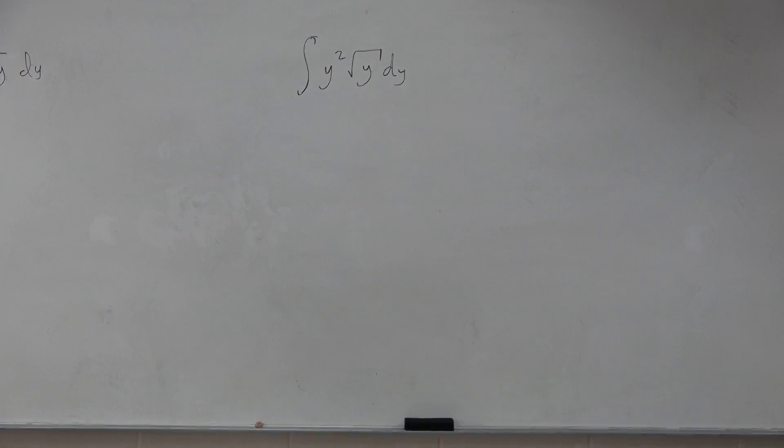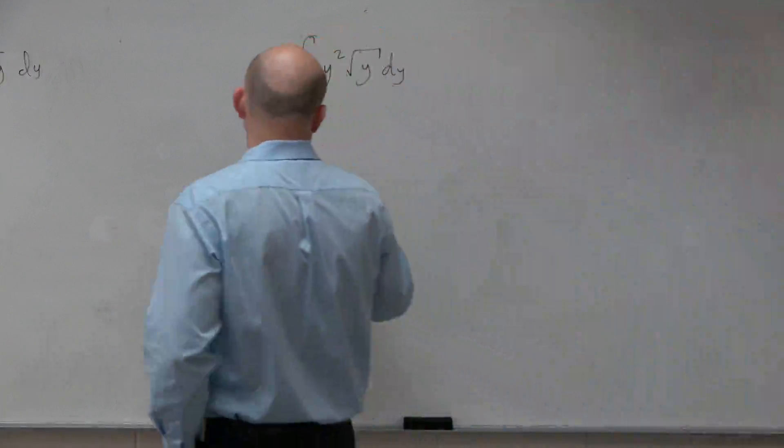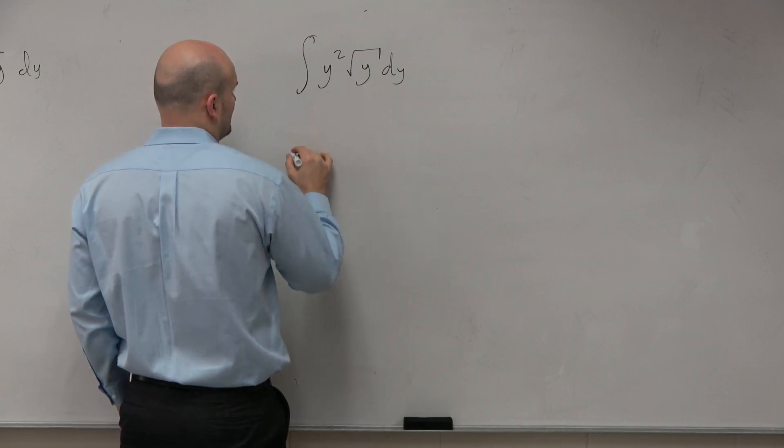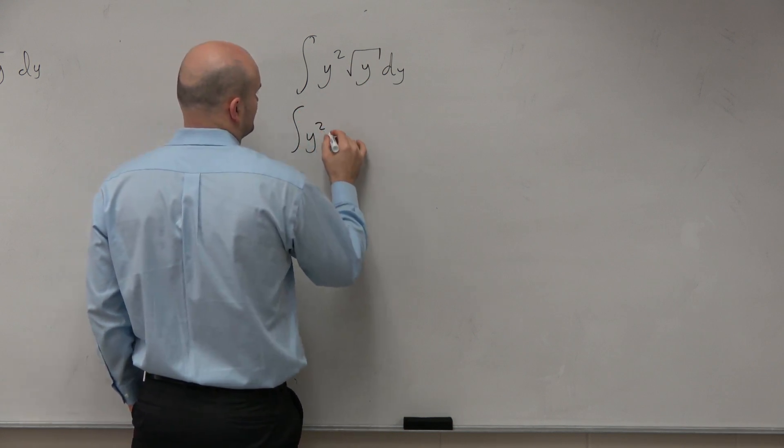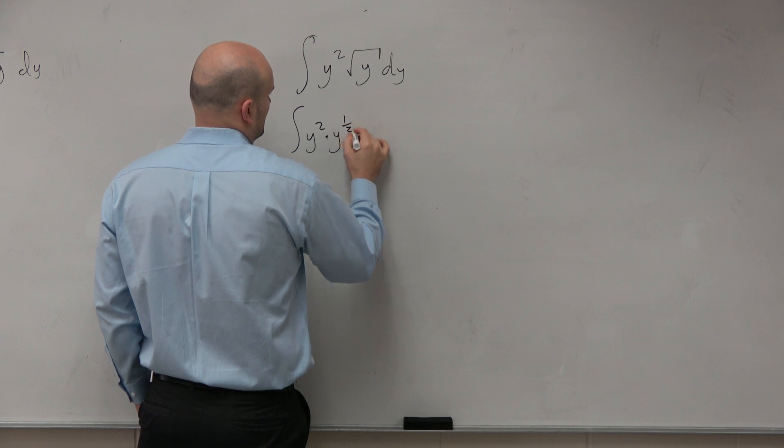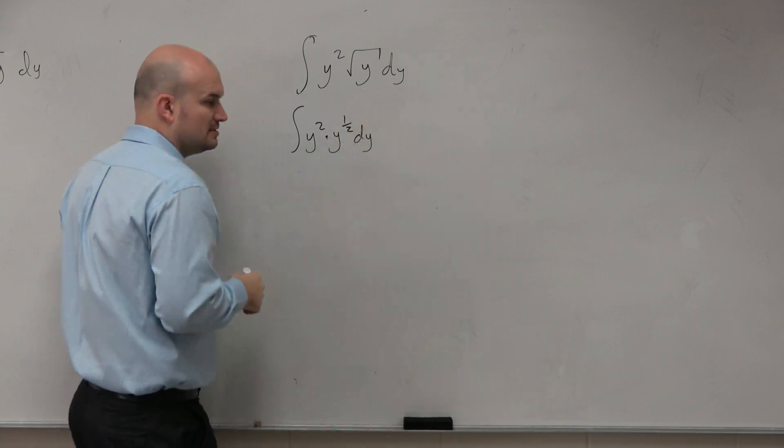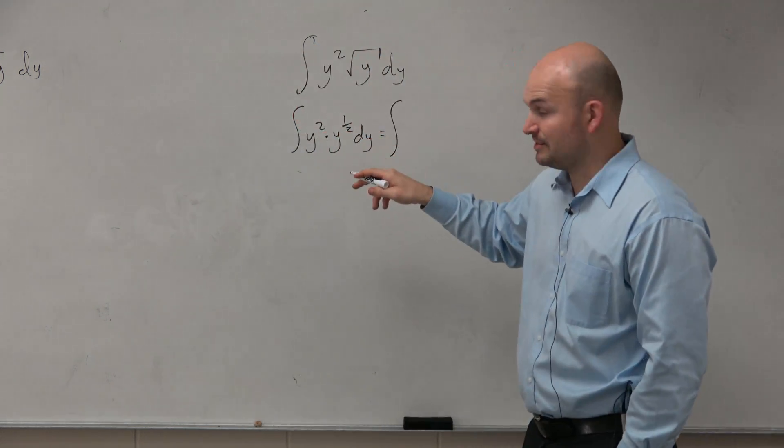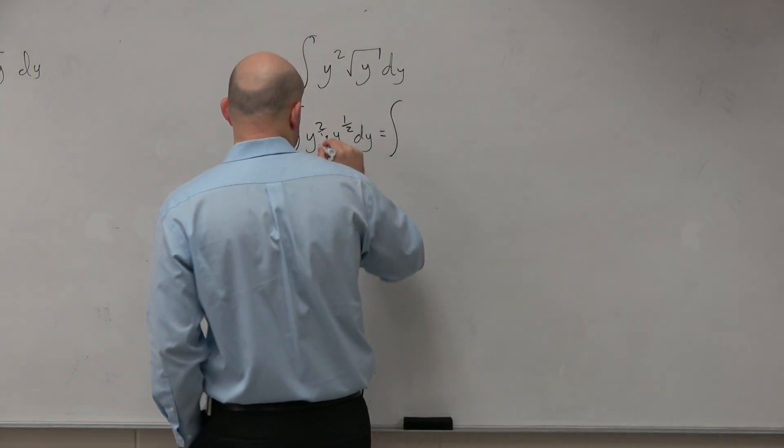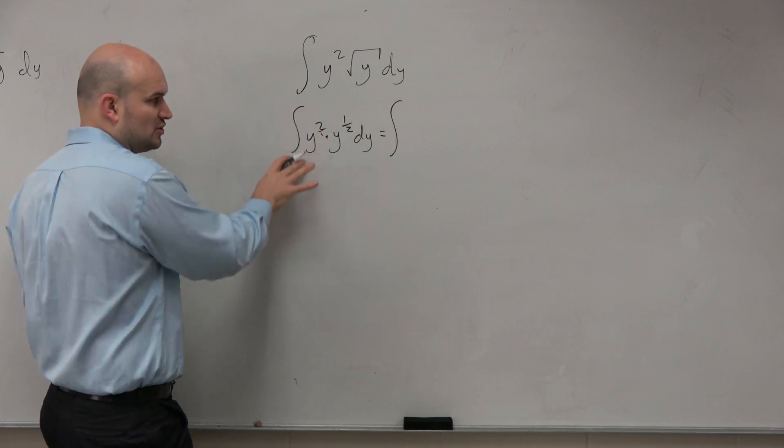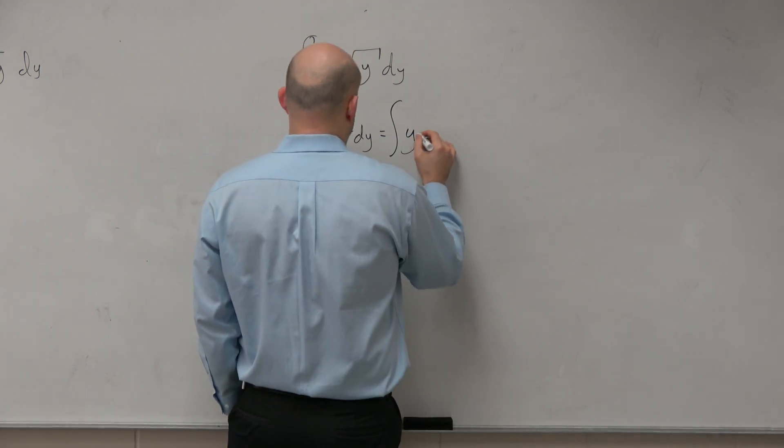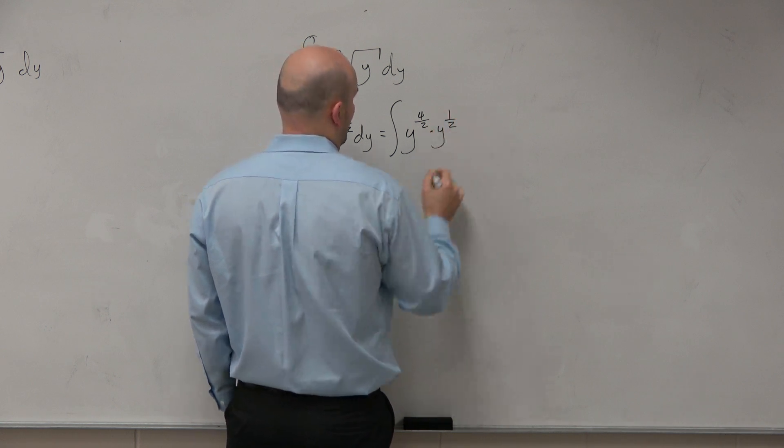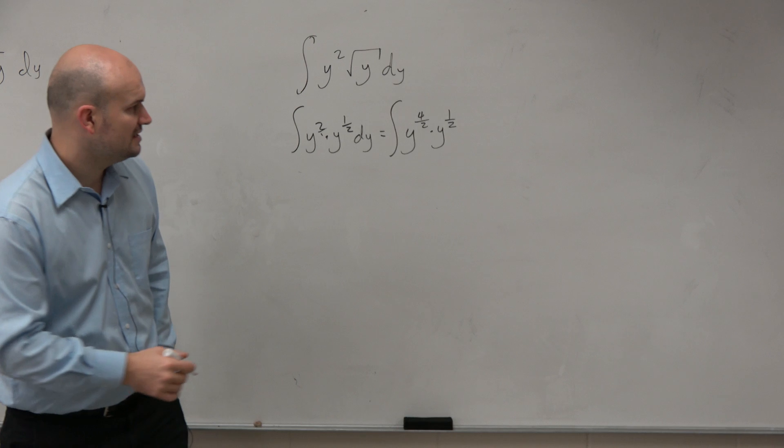So the first thing, if we're just using the power rule, is I can rewrite this. I can rewrite the y squared times dy, which is equal to the integral of, now again, I've got to get common denominators. So if I think of this as a denominator of 1, I would have to multiply by 2 over 2. So I could write this as 4 over 2 times y to the 1.5 dy.